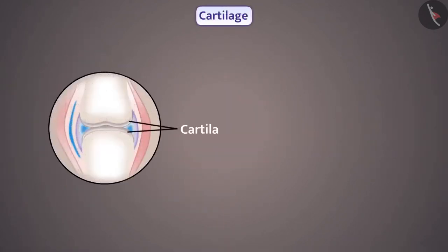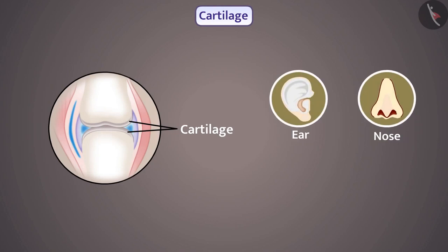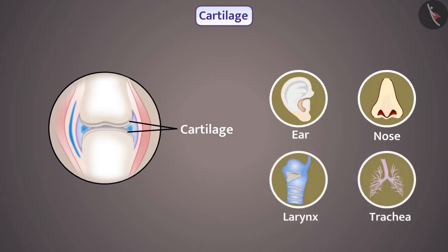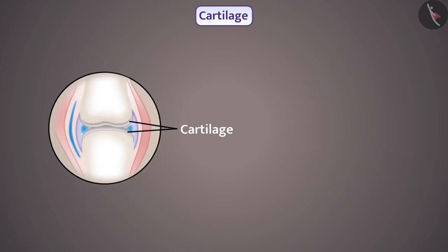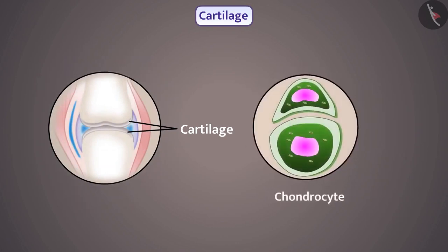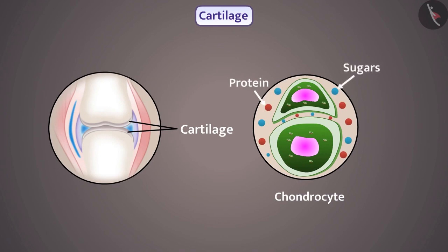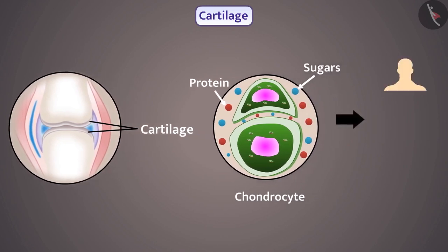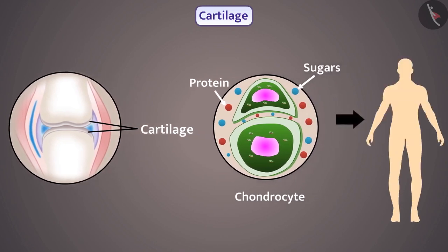Similarly, cartilage is also a type of connective tissue. Cartilage is present in our ear, nose, larynx and trachea. The cells of this tissue, that are chondrocytes, are flexible and widely spaced — that's why we can bend cartilage easily. Its cells are embedded in a matrix composed of proteins and sugars. Cartilage smoothens the joints of bones and gives shape and support to different organs.